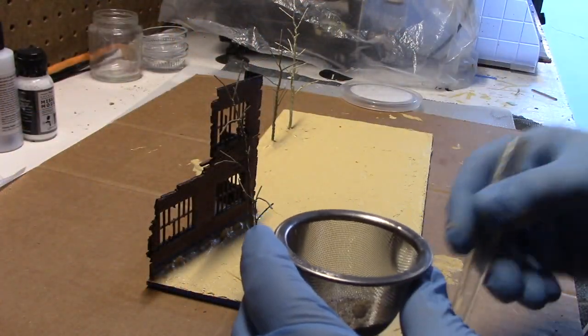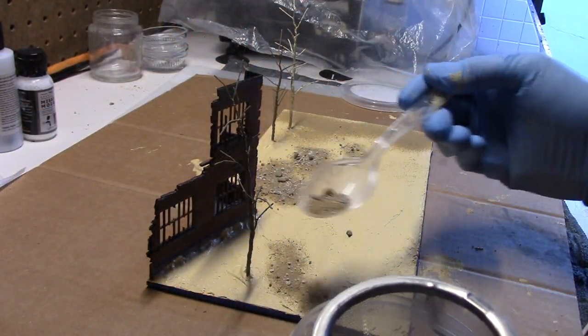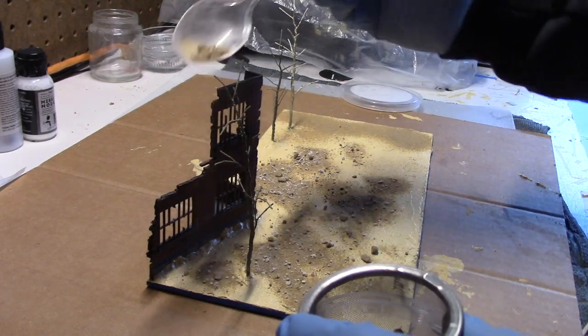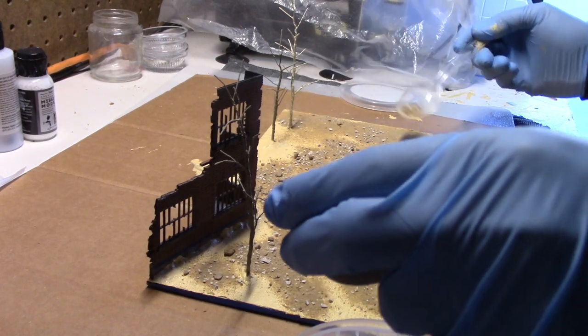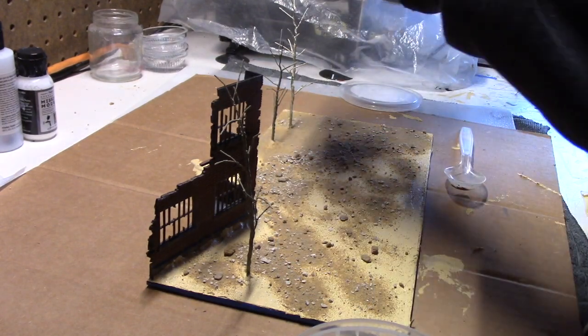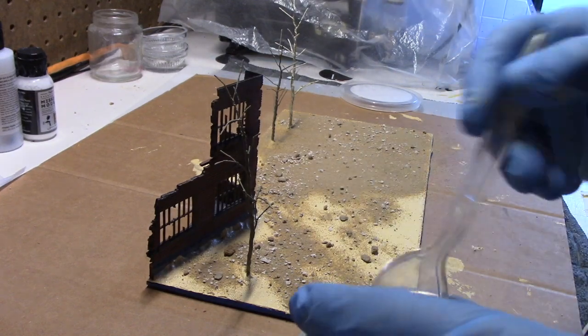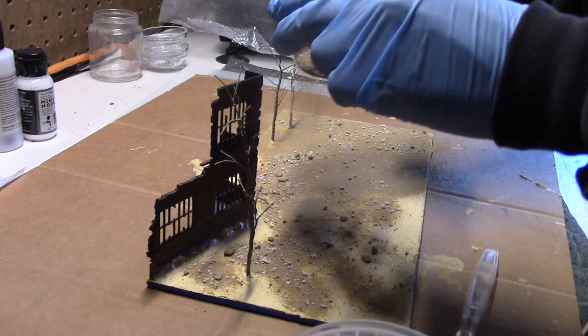So the earth texture material does have some adhesive property so while it's wet you can add more detailing like I'm doing here. So I spread a second layer and this stuff here that you're seeing I'm sprinkling is some material I got at a local gaming store. It's just some fine dirt with some fine rocks. And I figured it would just add a little more realism to our display base.